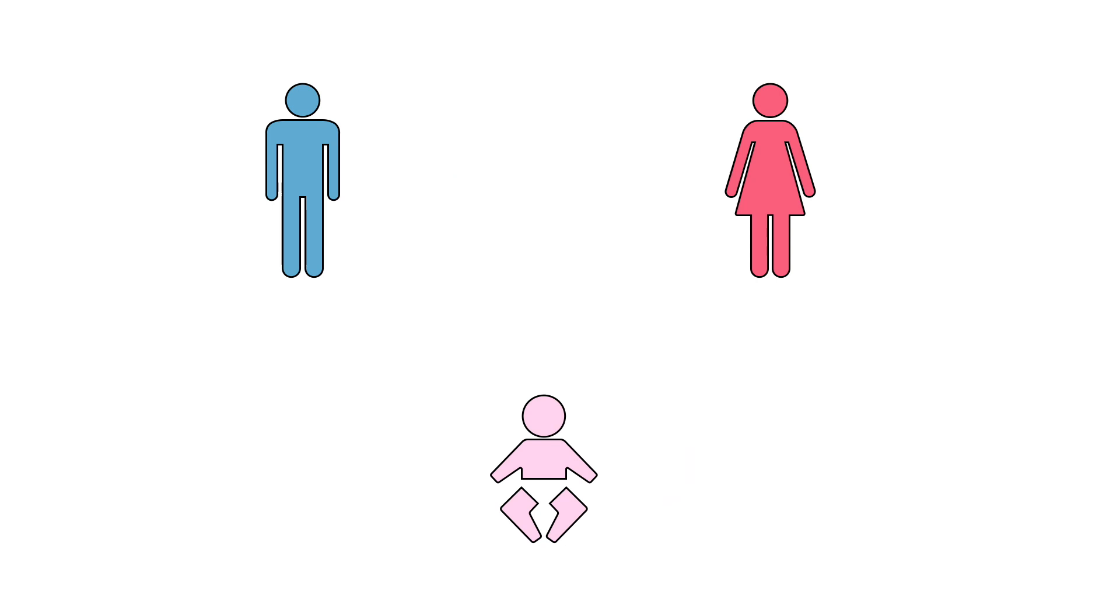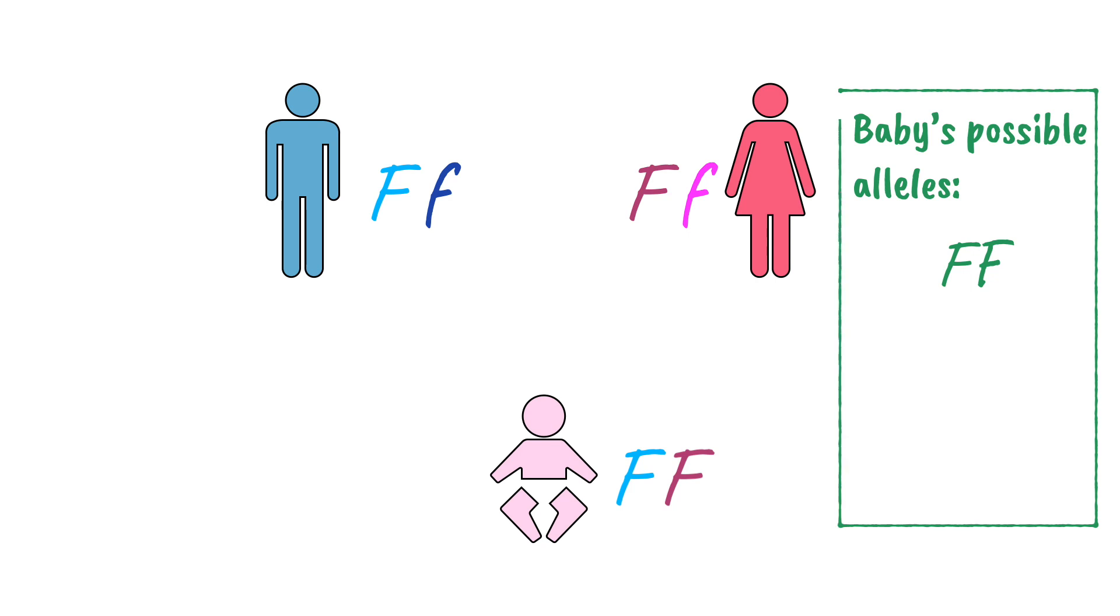But let's look at other possibilities. Let's say both parents have one normal allele and one cystic fibrosis allele. It's possible the baby may, by chance, inherit this version from their father and this one from their mother. They may instead inherit this version from their mother, and have one normal version and one cystic fibrosis version.